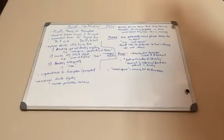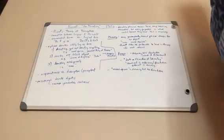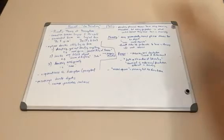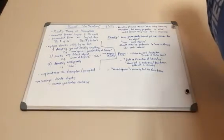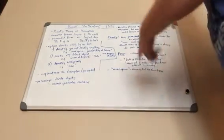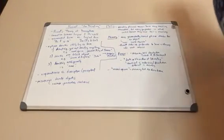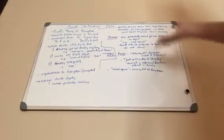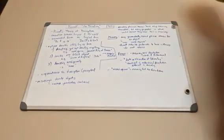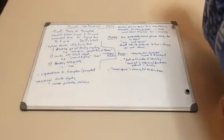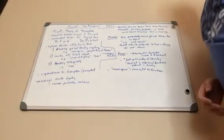In this article, Russell discusses Frege as well as Meinong, and basically contrasts their theories of meaning with his own, and argues for his position.